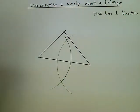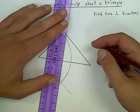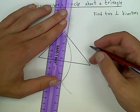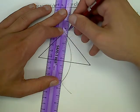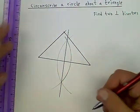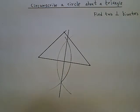Now we connect these two intersections together. And that gives us one perpendicular bisector.